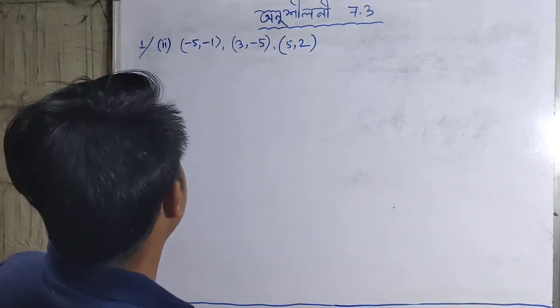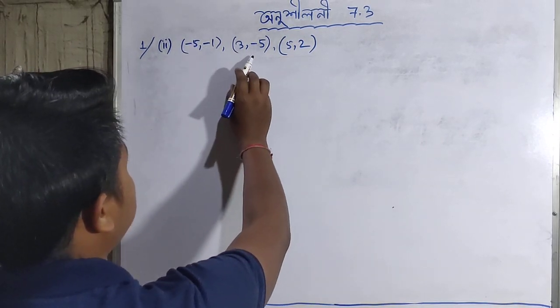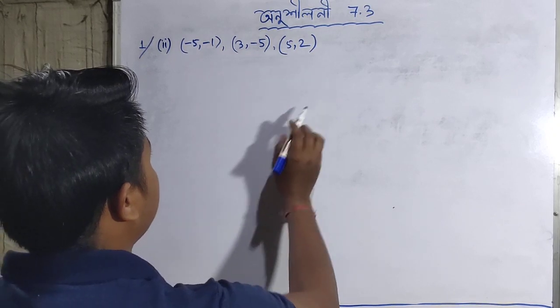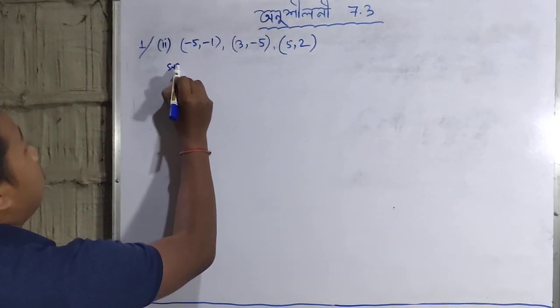The problem gives us three coordinate points: A is (-5,-1), B is (3,-5), and C is (5,2). We need to find the area using these coordinates.